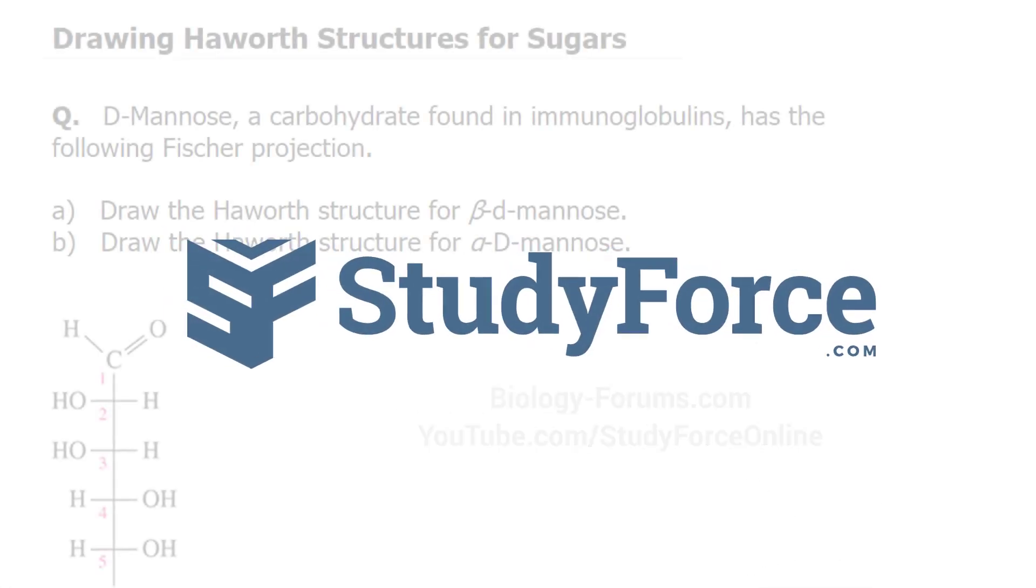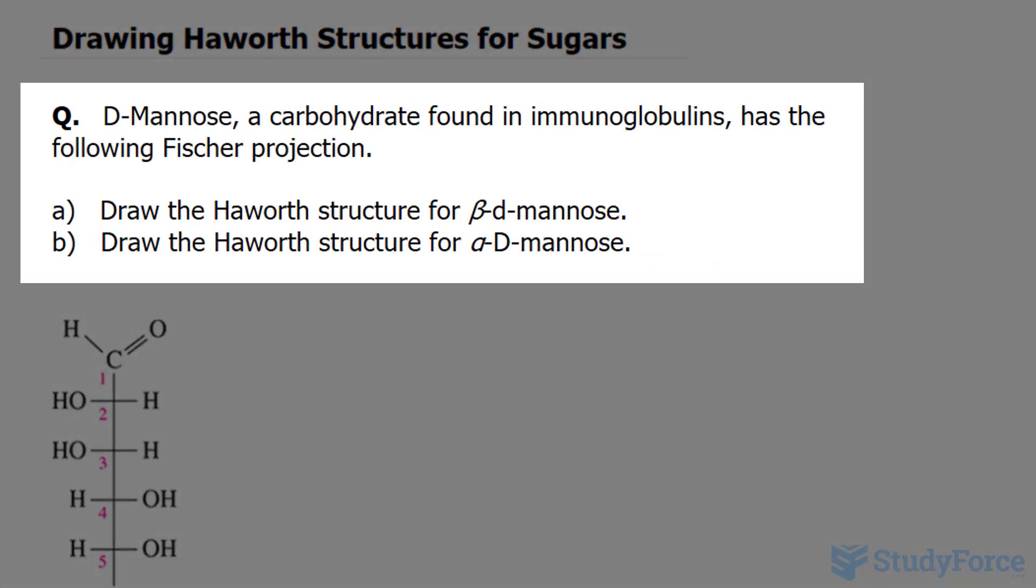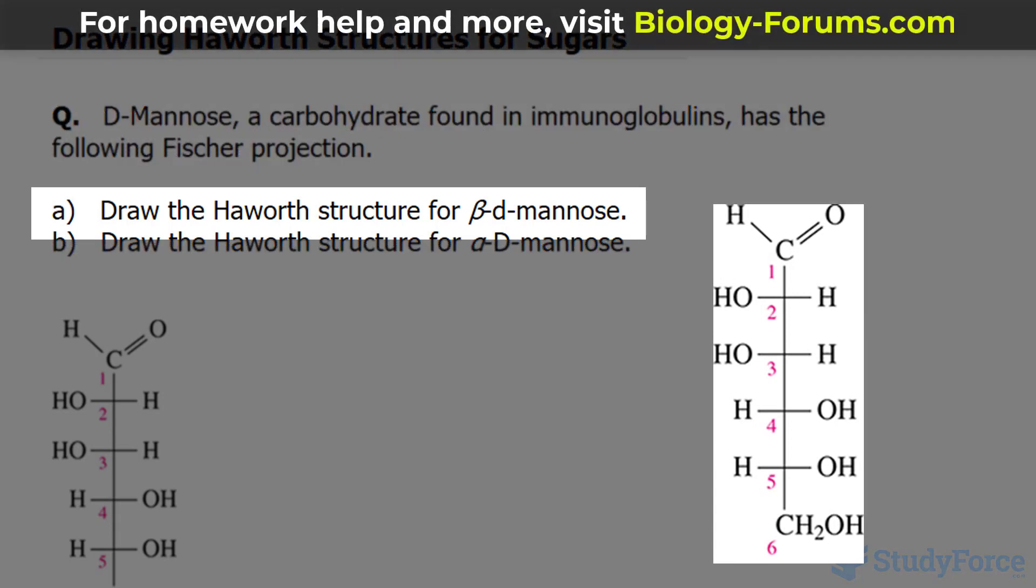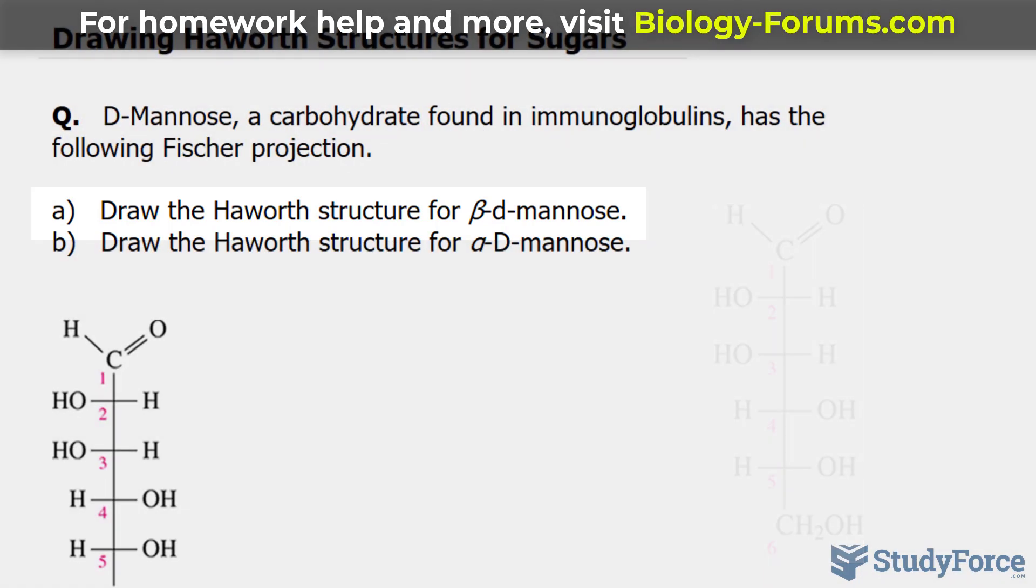In this lesson, we'll learn how to draw the Haworth structures for sugars. The question reads, D-mannose, a carbohydrate found in immunoglobulins, has the following Fisher projection. In question A, they want us to draw the Haworth structure for the beta-D-mannose.